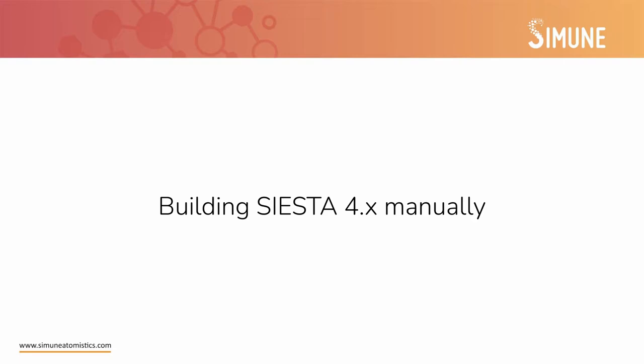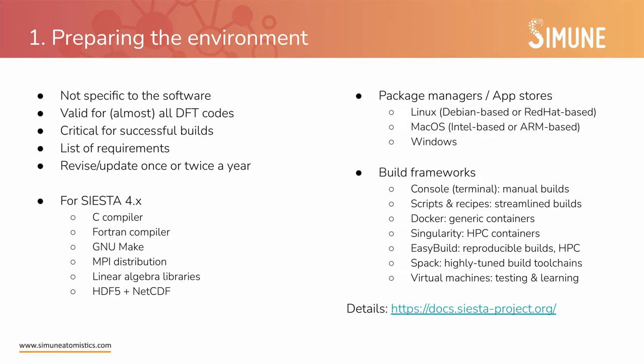We will now explore three examples. The first one is to build a version of Siesta 4 manually, and we will give more details in this case. So preparing the environment is a step that is not specific at all to the software you want to build. What we will do here is valid for almost all the DFT codes. This is really critical if you want to have a successful build, and it is mostly organized around the list of requirements that you need to have before you can build Siesta. Also what is very important to know is that this is something that you have to do at most once or twice a year, so this is not something that you need to do before each build.